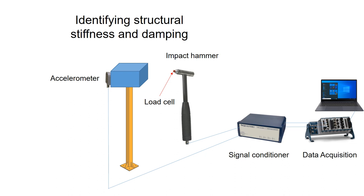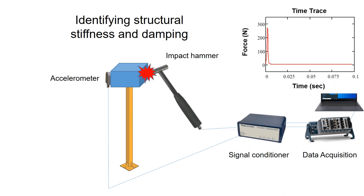At the tip of the impact hammer, there's a load cell that records the force once impact is applied. So when you apply an impact on the object, the impact force is recorded in the data acquisition as shown on the top right. The figure on the top right shows the applied force with respect to time, and as you could see, a strong peak force was applied in a very short time span.